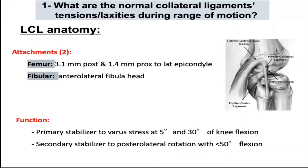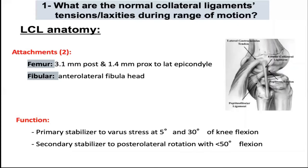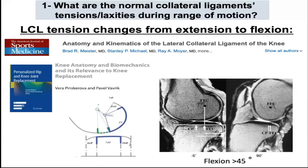When we look at the LCL anatomy, it is attached approximately 3 mm posterior and 1.5 mm proximal to the lateral epicondyle, and distally attached to the anterolateral side of the fibular head. It prevents varus injuries at 5 and 30 degrees of flexion, and also adds stability of the posterolateral rotation before 50 degrees of flexion.